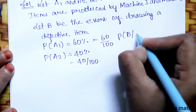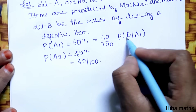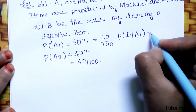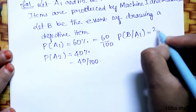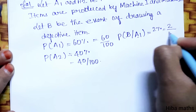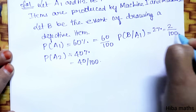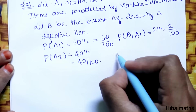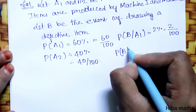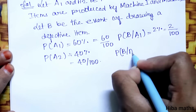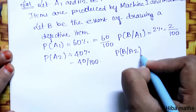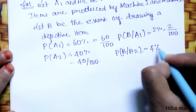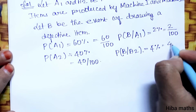P of B given A1, that is defective items from Machine 1, is 2%, which equals 2 by 100. P of B given A2, defective items from Machine 2, is 4%, which equals 4 by 100.